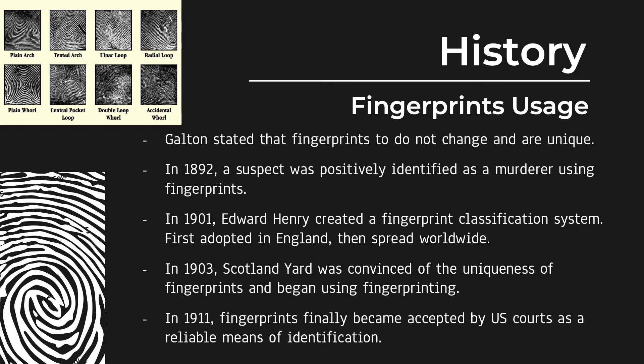In 1892, a suspect was positively identified as a murderer using fingerprints. In 1901, Mr. Henry created a fingerprint classification system, first adopted in England, then spread worldwide. In 1903, Scotland Yard was convinced of the uniqueness of fingerprints and began using them. In 1911, fingerprints finally became accepted by the U.S. court as a reliable means of identification, and the next year it proved a case.